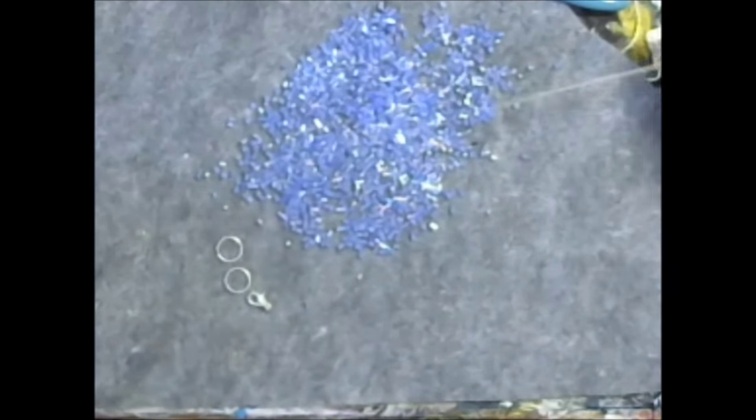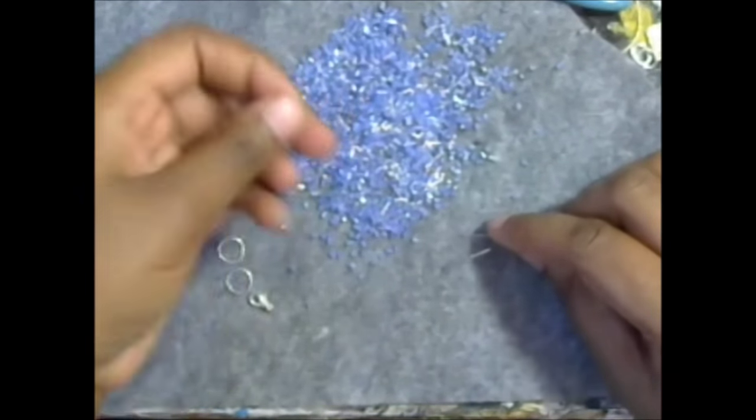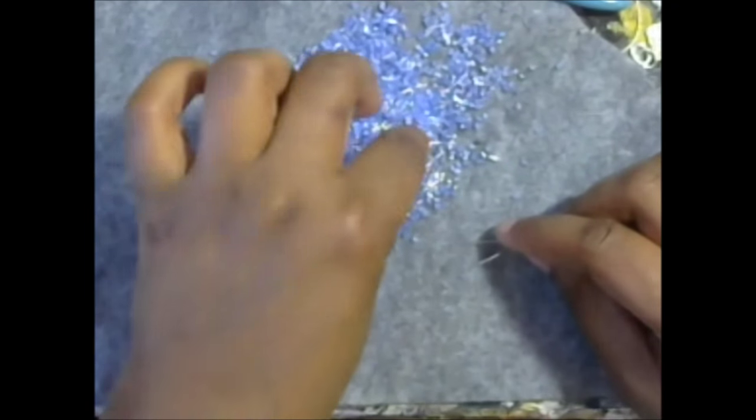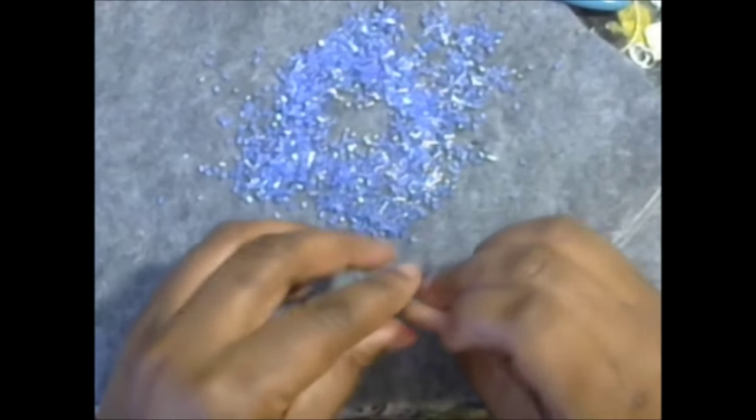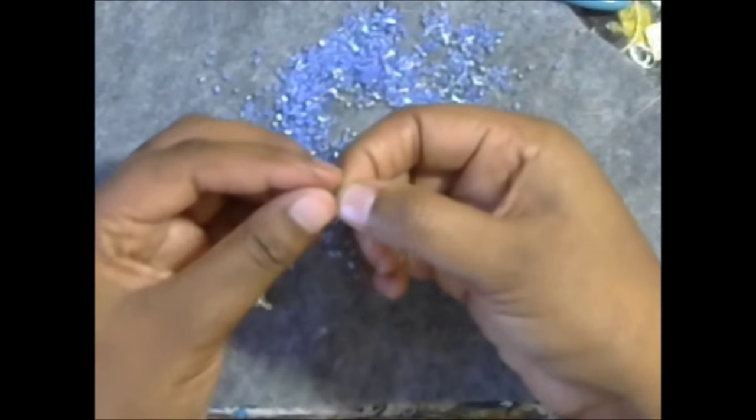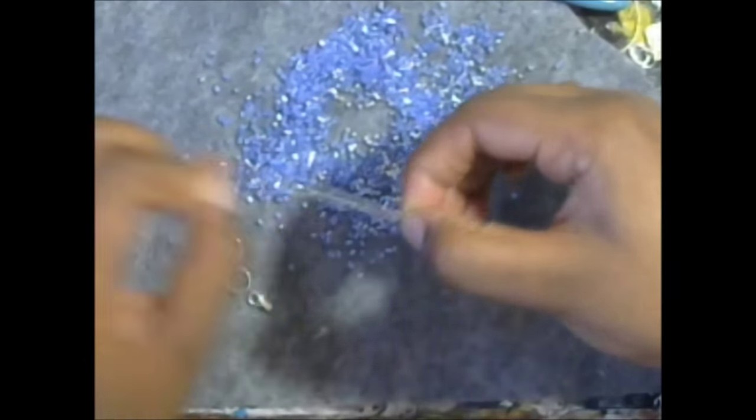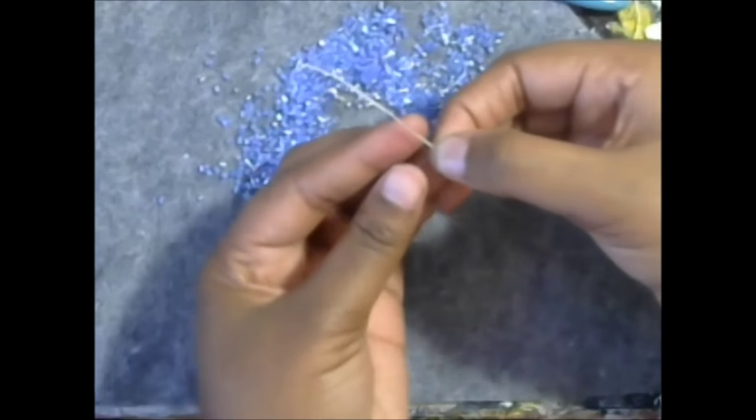And then what I'm going to do is on each side, I'm just going to make a pattern with these beads. So I'm going to do 10 of these beautiful blue beads. And then I'm going to do one of the silver beads. And I'm going to keep doing that on both sides until I have about two inches left on the ends here.